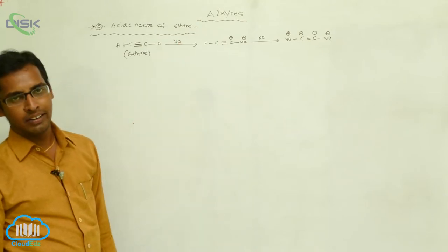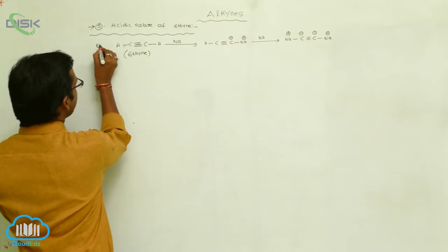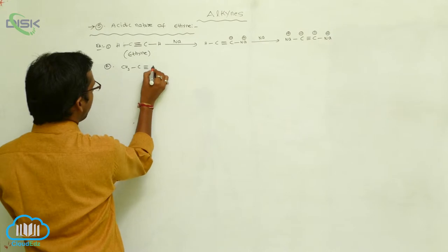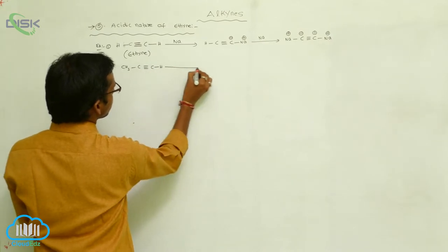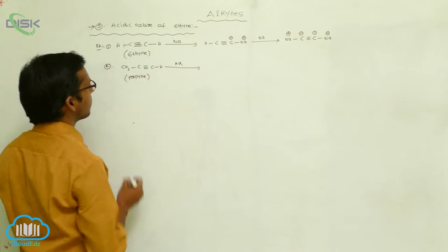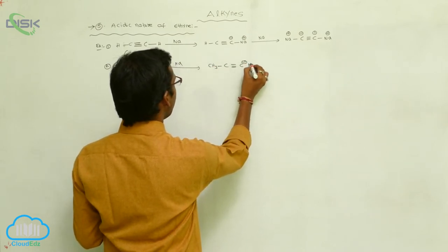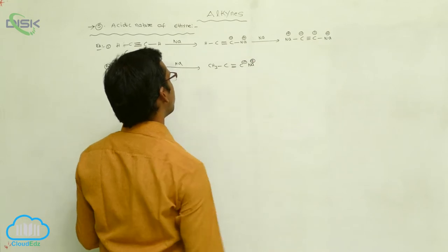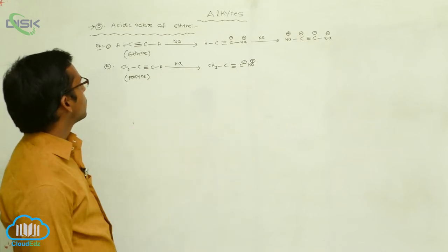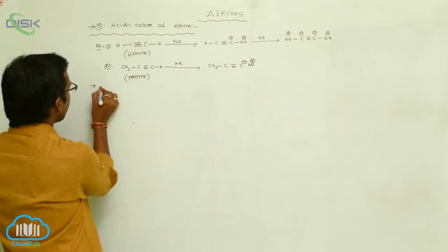The acidic character of hydrocarbons is established with sodium metal or sodamide (NaNH2). For another example, consider propyne: CH3-C triple bond CH. When propyne reacts with sodium metal, it gives CH3-C triple bond C minus NA plus — sodium propanide is formed. This demonstrates the acidic nature of alkynes.